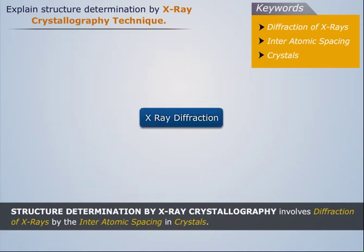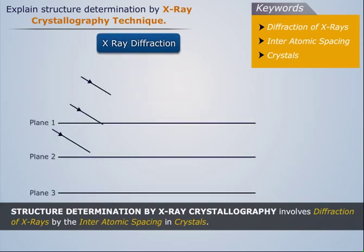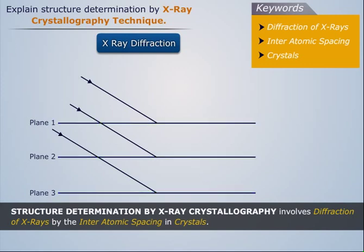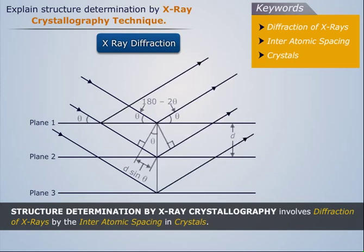Let us now study X-ray diffraction in detail. A beam of X-rays of wavelength lambda is directed towards the parallel planes of the crystal at an angle theta and then gets reflected. There is a path difference between rays reflected from planes 1 and 2.